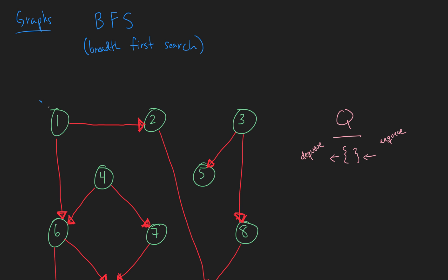We're going to start from node 1 and work numerically in order. The first thing we do is mark node 1 with a distance of 0, since it is 0 distance away from itself. Let's draw our queue — it's empty at first — and we're going to enqueue 1. So let's put 1 in the queue.